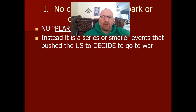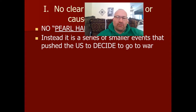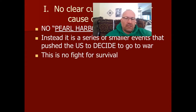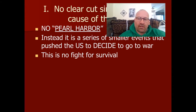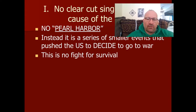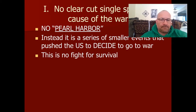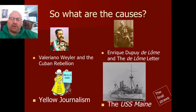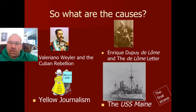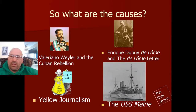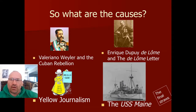What we see here is a series of smaller events that is going to push for a decision to go to war. The United States is not going to have war thrust upon it — it is going to make the decision. There's no fight for survival here; the United States at no point is under threat of a Spanish invasion. So the causes really fall under four headings: the Cuban rebellion, the De Lome Letter, yellow journalism, and the USS Maine.